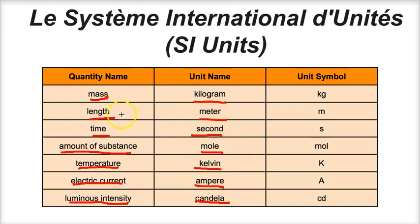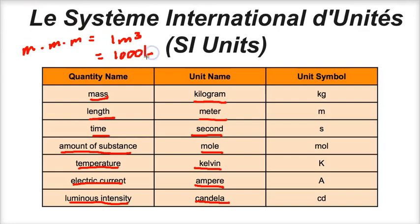From these seven base units we can derive other units of measurement. For example, if we take meters times meters times meters we get one cubic meter, and one cubic meter equals 1000 liters. So the liter is a derived unit — derived by cubing one of the seven main SI units. Liters are derived from the meter, and that's the concept of derived units we're going to look at next.